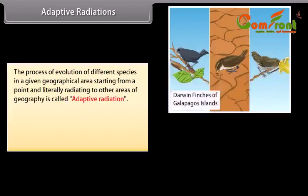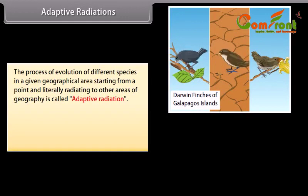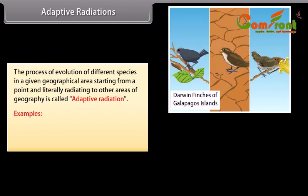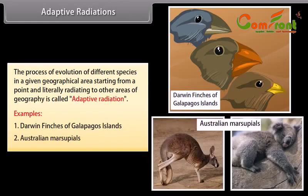Adaptive Radiation. The process of evolution of different species in a given geographical area, starting from a point and literally radiating to other areas of geography, is called adaptive radiation. Examples include Darwin's finches of the Galapagos Islands and Australian marsupials.